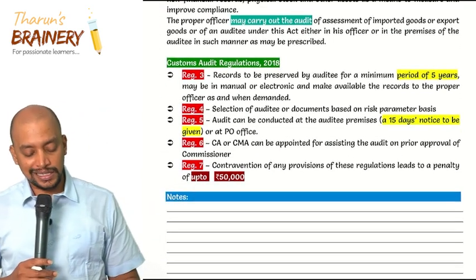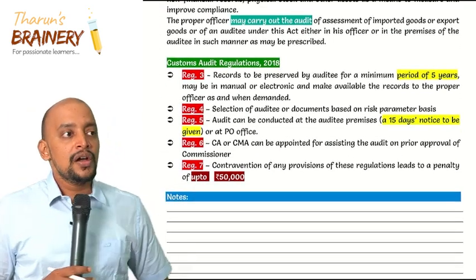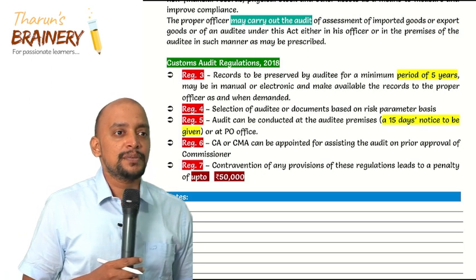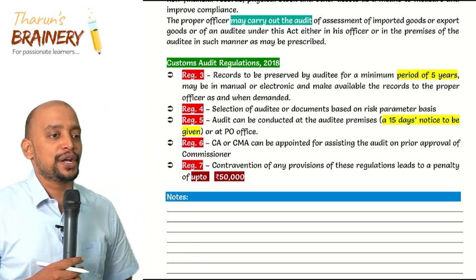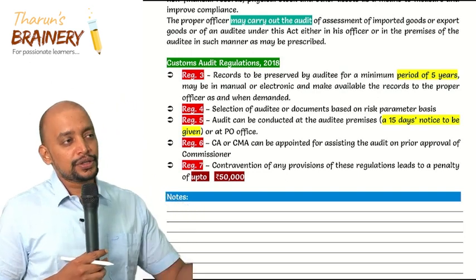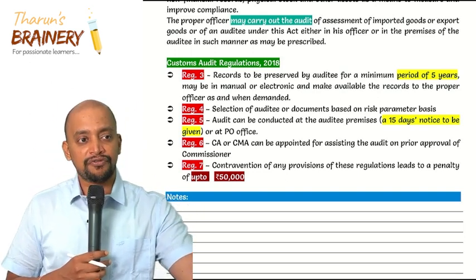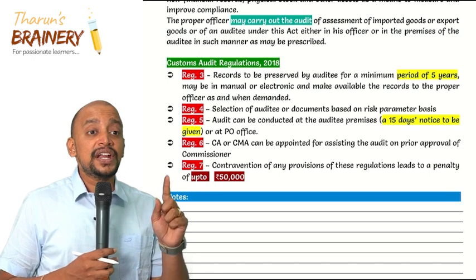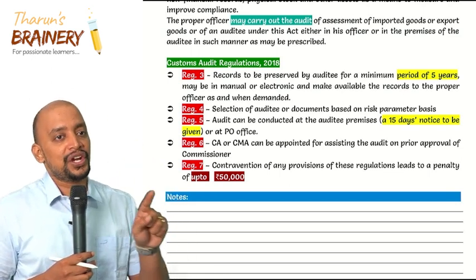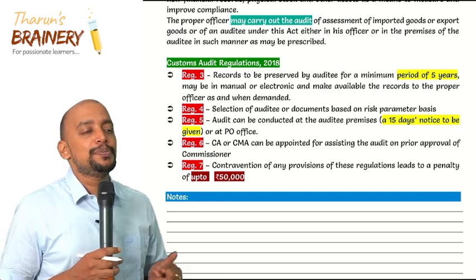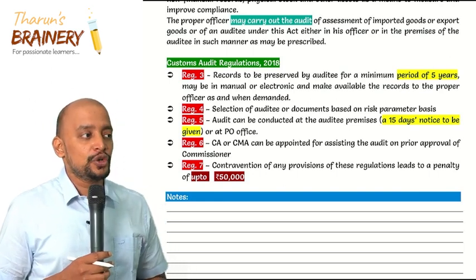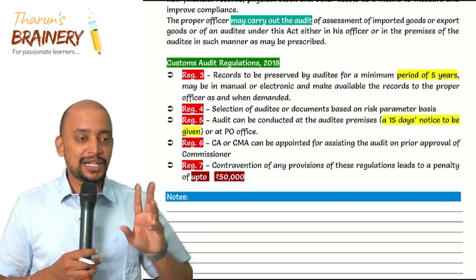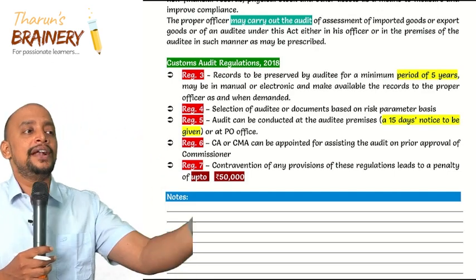There are some regulations in this regard. As per Regulation 3, all import and export related records should be preserved for a minimum period of 5 years pertaining to a particular financial year. For example, for financial year 2022-23, we need to preserve records for the next 5 years from the end of the financial year. In GST, the same point requires preservation for 72 months — literally 6 years — from the due date of furnishing the annual return.